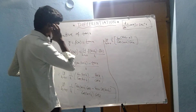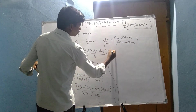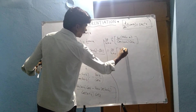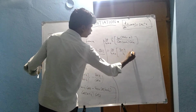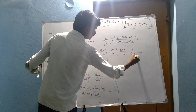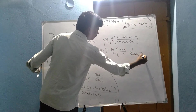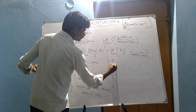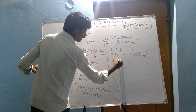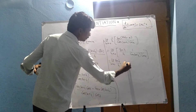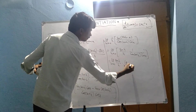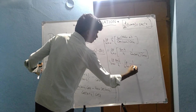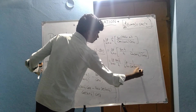The x's cancel here. That equals the limit as h tends to 0 of sin(h)/h, multiplied by the limit as h tends to 0 of 1/[cos(x+h)·cos x].